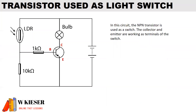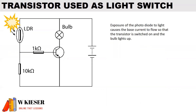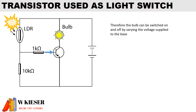Here we have a transistor being used as a light switch. In this circuit, the NPN transistor is used as a switch. The collector and the emitter are working as terminals of the switch. Exposure of the photodiode to light causes the base current to flow so that the transistor is switched on and the light bulb lights up. Therefore, the bulb can be switched on and off by varying the voltage supplied to the base.